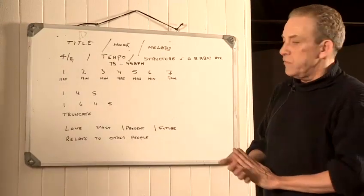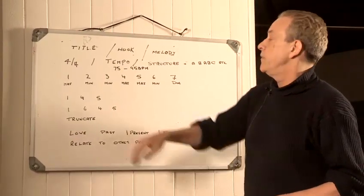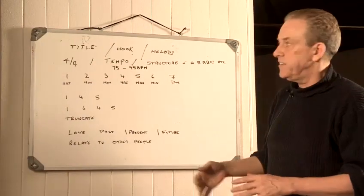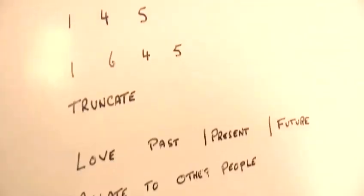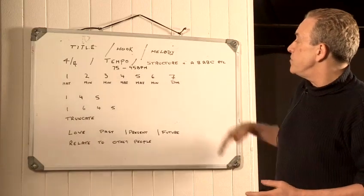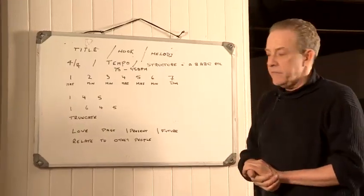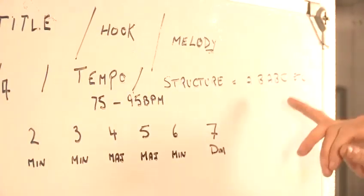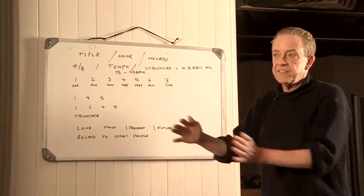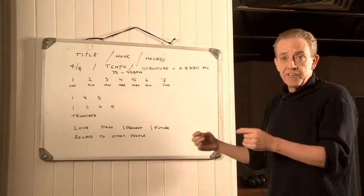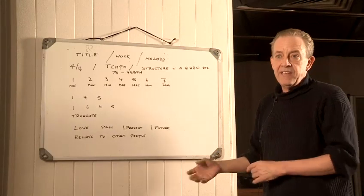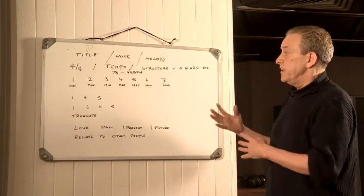Here are some fundamental things you'll find in most pop songs. They're nearly always in 4/4, apart from the odd 6/8. The tempo ranges between 75 and 95 beats per minute. All songs are based on structure, and we talk in the business about A-B, A-B or A-B-C — these are the different chunks. Verse would be A, chorus would be B, and a C part would be a third part, like a middle eight, a bridge, or what they call in America a release.